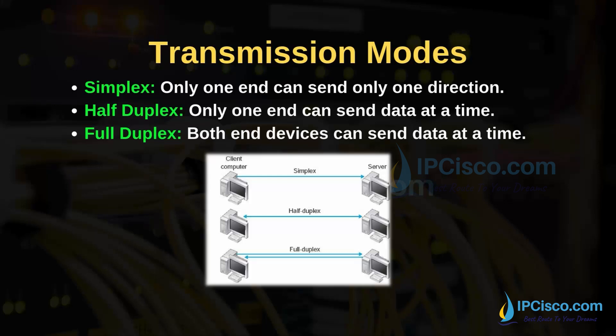Lastly, let's talk about transmission modes in computer networking. There are three transmission modes: simplex, half-duplex, and full-duplex. In simplex mode, only one end can send in only one direction. In half-duplex mode, only one end can send data at a time. In full-duplex mode, both end devices can send data at the same time.